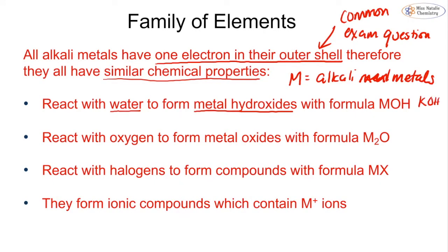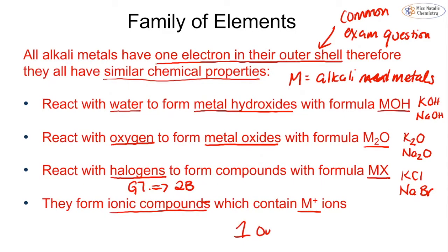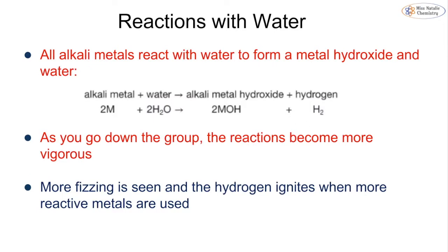For example, you could have KOH or NaOH — potassium and sodium hydroxide. They react with oxygen to form a metal oxide with formula M₂O, for example K₂O or Na₂O. They react with the halogens in group 7 to form compounds with formula MX — for example KCl or NaBr. These are ionic compounds that all contain M¹⁺ ions because they have one outer electron which is lost to form a one-plus ion.